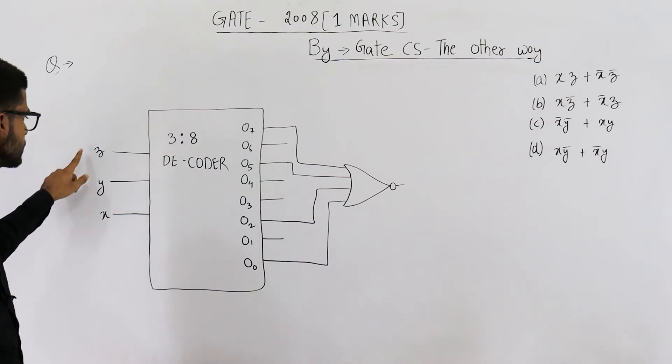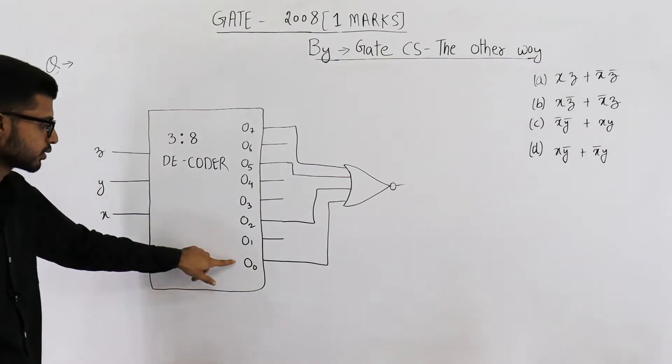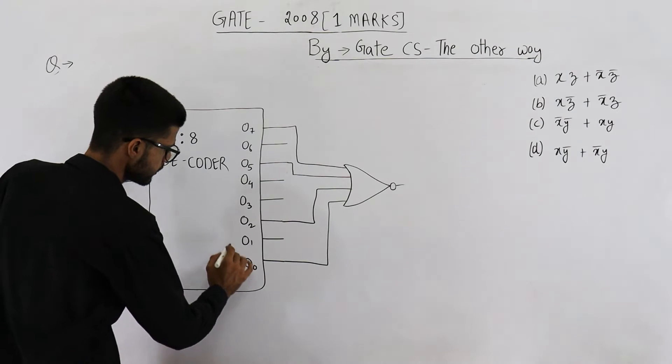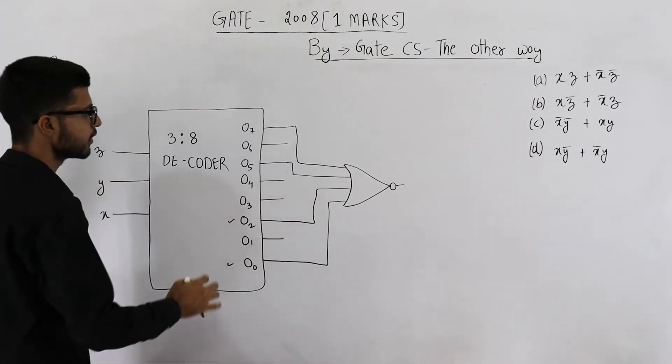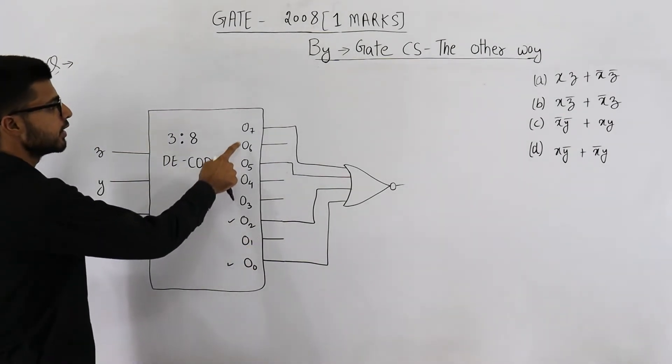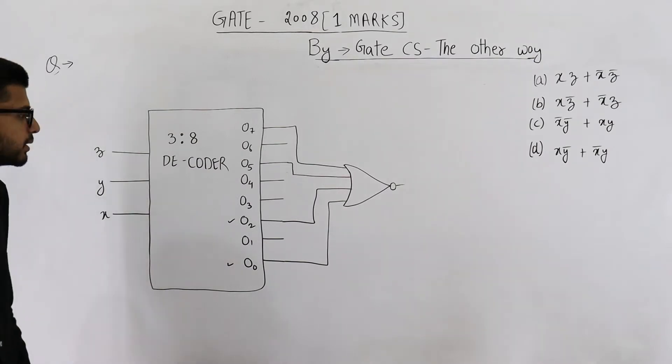Whenever values of x, y, z are 0, 0, 0, this one will be high. On 0, 1, 0, this one will be high. On 1, 0, 1, this one will be high. And on all ones, 7 will be high.